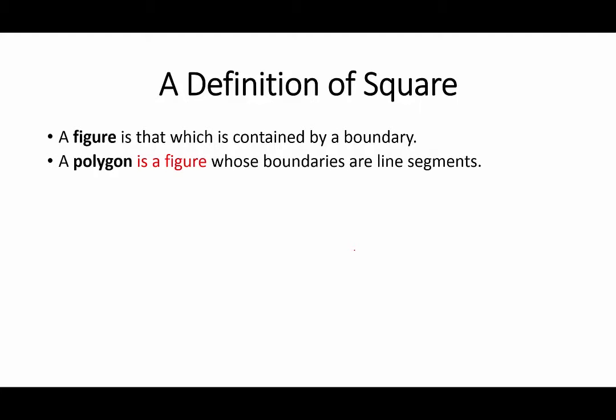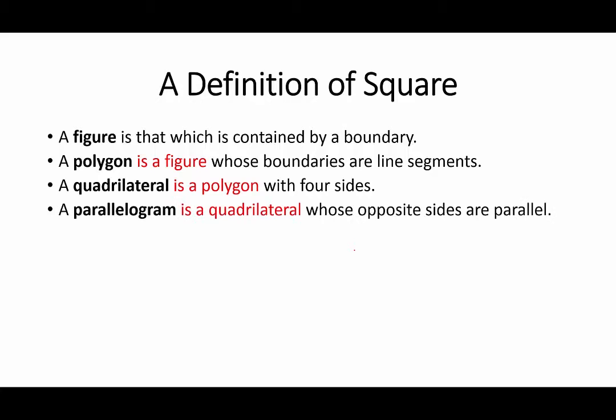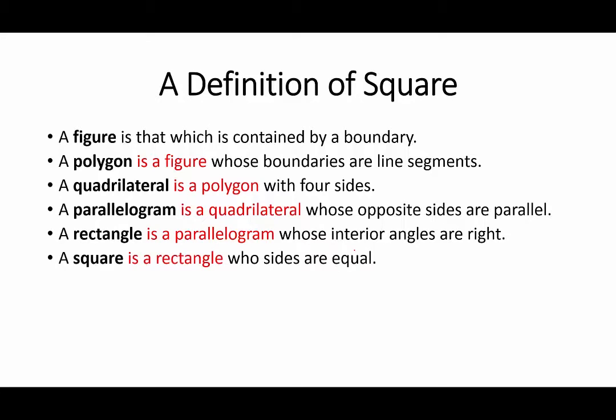A polygon is a figure whose boundaries are line segments. A quadrilateral is a polygon with four sides. A parallelogram is a quadrilateral whose opposite sides are parallel. A rectangle is a parallelogram whose interior angles are right. A square is a rectangle whose sides are equal.